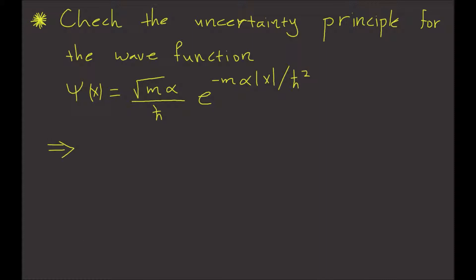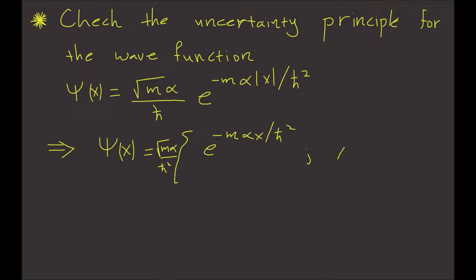First we need to calculate the expectation value of x squared. Let's rewrite the psi function in two terms. Put the constant outside: m times alpha divided by h-bar squared. Here we have e to the minus m times alpha times x divided by h-bar squared, for x greater than or equal to 0. And e to the positive m times alpha times x divided by h-bar squared, for x less than or equal to 0.